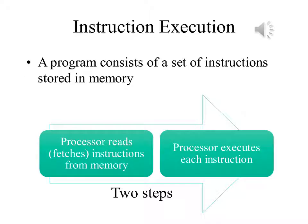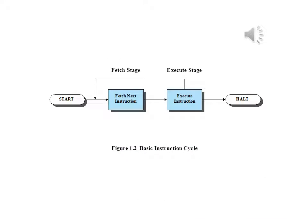A program to be executed by a processor consists of a set of instructions stored in memory. In its simplest form, instruction processing consists of two steps. The processor reads, or fetches, instructions from memory one at a time, and then executes each instruction. Program execution consists of repeating the process of instruction fetch and instruction execution. The processing required for a single instruction is called an instruction cycle, depicted with a fetch stage and an execute stage.